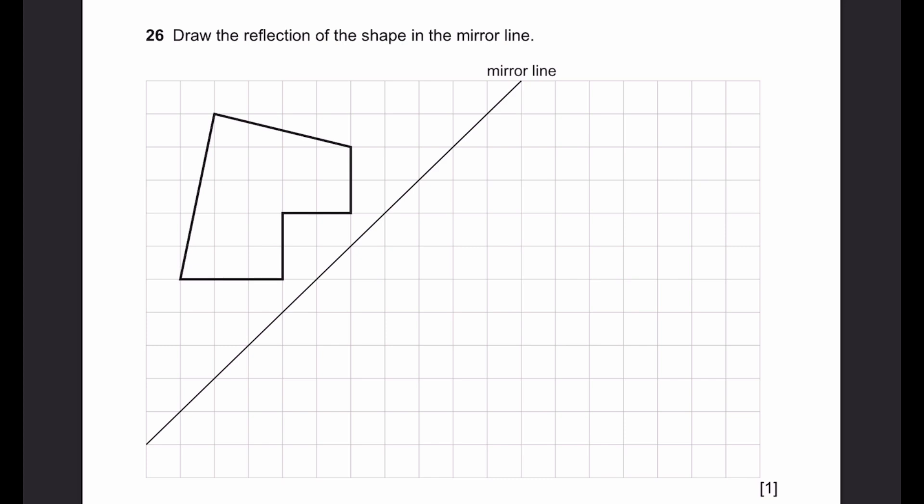Question 26. Draw a reflection of the shape in the mirror line. So first we just reflect all the points. This one comes here, like that. This one comes here, like that. And we do that for every single point. Now we simply have to connect the dots, just like this. Remember to connect it in the same way that it's connected in the actual shape given. All of them have to be straight lines. That's the answer.